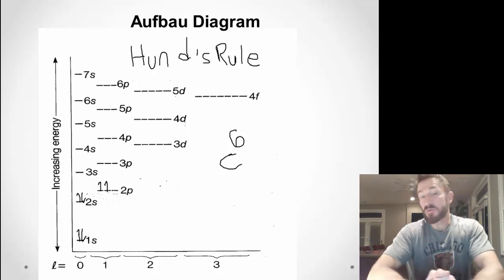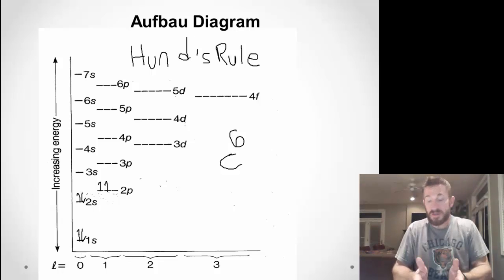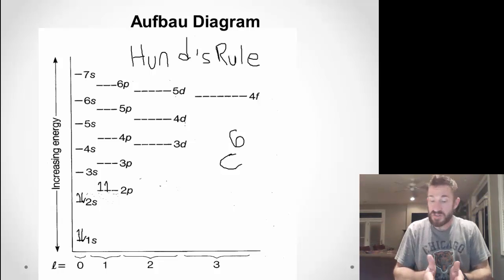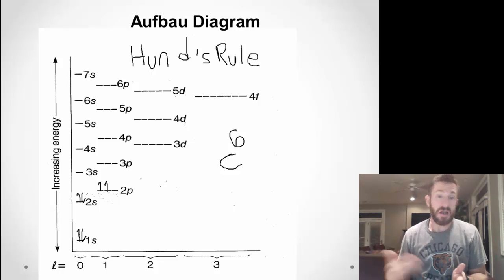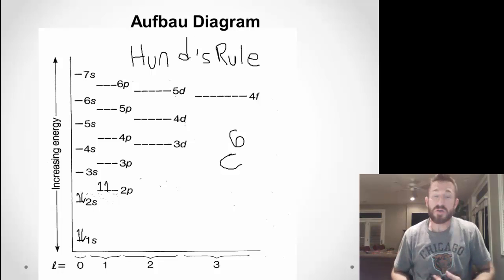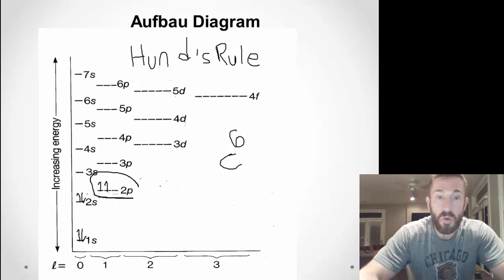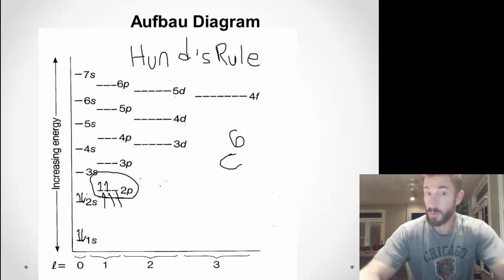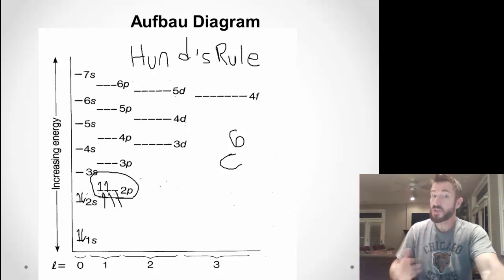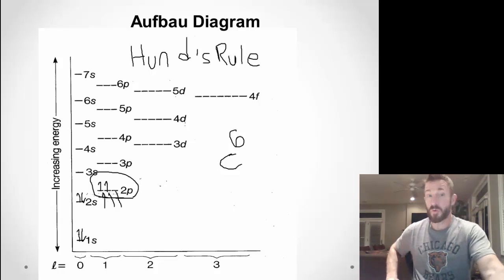I like to refer to this as the bus rule. If you were to get on a bus and someone was in a seat, you would not sit next to them — you'd get in the seat behind them or somewhere else. Hund's rule works the same way: you put one electron in each orbital. Notice in 2p there are three orbitals. So we put one electron in each orbital before we double up. We can get a total of six electrons in the p orbital.